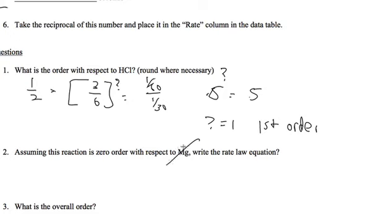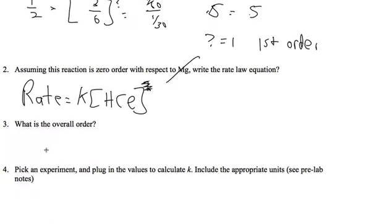Assuming it's zero with respect to Mg, write the rate law equation. So rate equals K HCl to the first, but you don't have to put the first. What's the overall order? Zero plus one equals one.